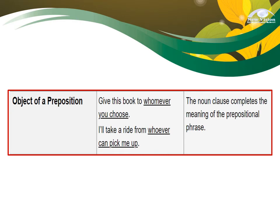The next use of your Noun Clause is as the object of a preposition — one of the easiest to identify because of the preposition. The Noun Clause completes the meaning of the prepositional phrase. Example: 'Give this book to whomever you choose.' 'Whomever you choose' is your Noun Clause, and 'to' is your preposition. Another example: 'I'll take a ride from whoever can pick me up.' 'Whoever can pick me up' is the Noun Clause, and 'from' is the preposition.